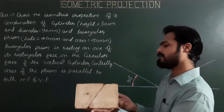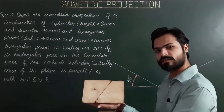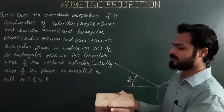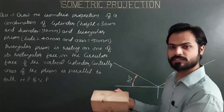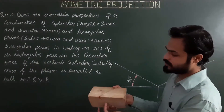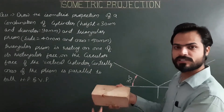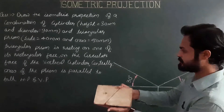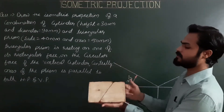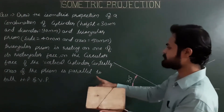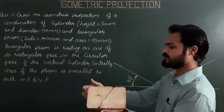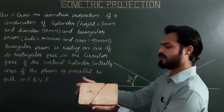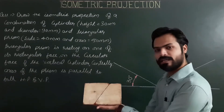The rectangular face of this prism is resting centrally on the circular face of the cylinder, so the center of this rectangular plane will coincide with the center of the upper circular base of the cylinder. The axis of the prism is parallel to both HP and VP — from the first center to the second center, an imaginary line called the axis is parallel to VP and parallel to HP. This is the final position.